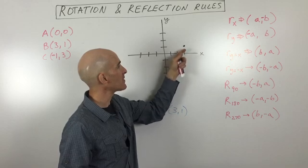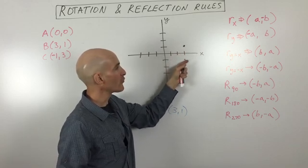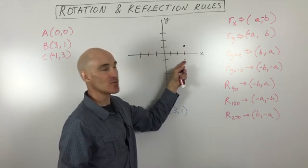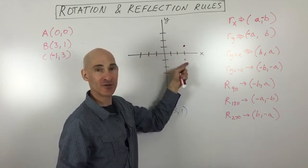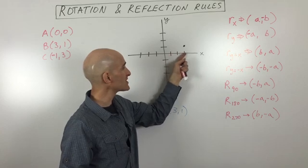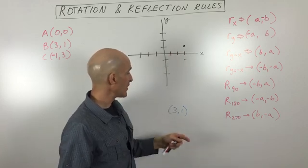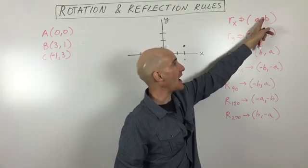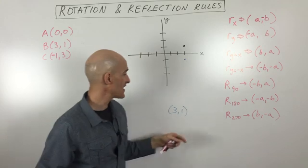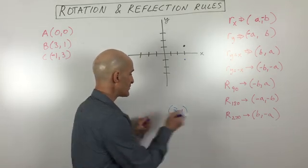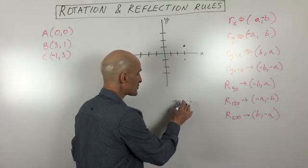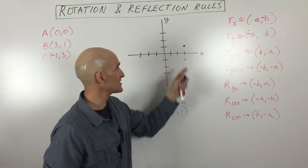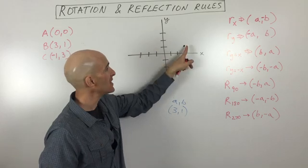Say we want to reflect it over the x-axis. When you fold it over the x-axis, you can see the new point is the mirror image over that line, and it's going to be at (3, -1). What happened is we made the y-coordinate the opposite sign and kept the x-coordinate the same. So all we did was make b the opposite sign — that's what reflects the point over the x-axis.